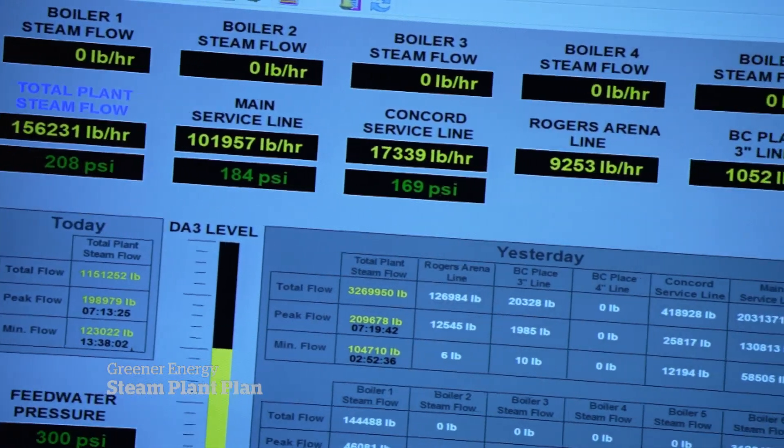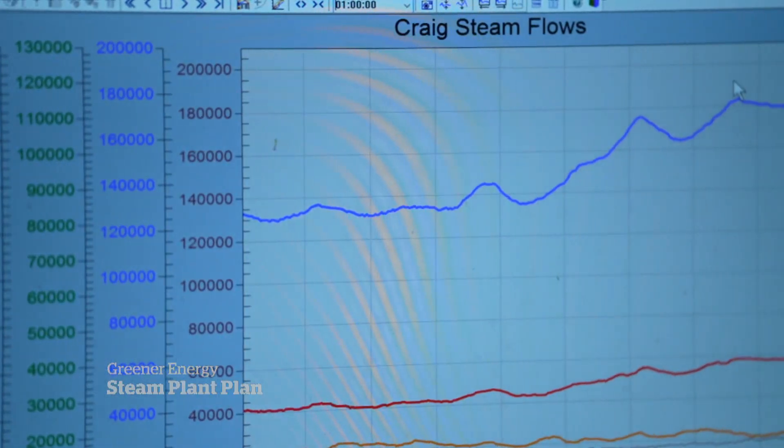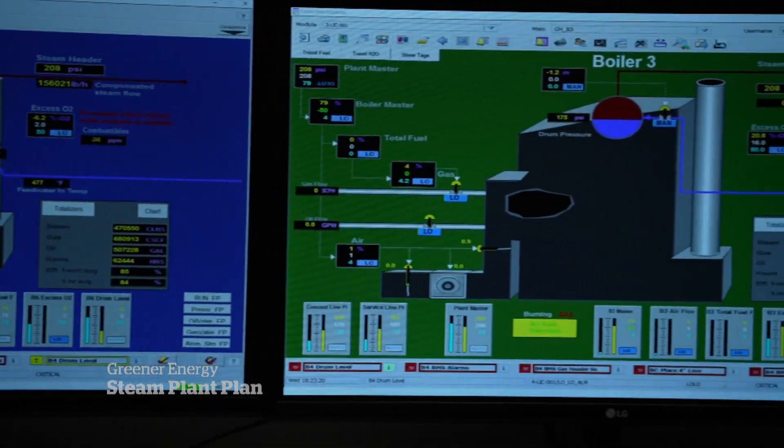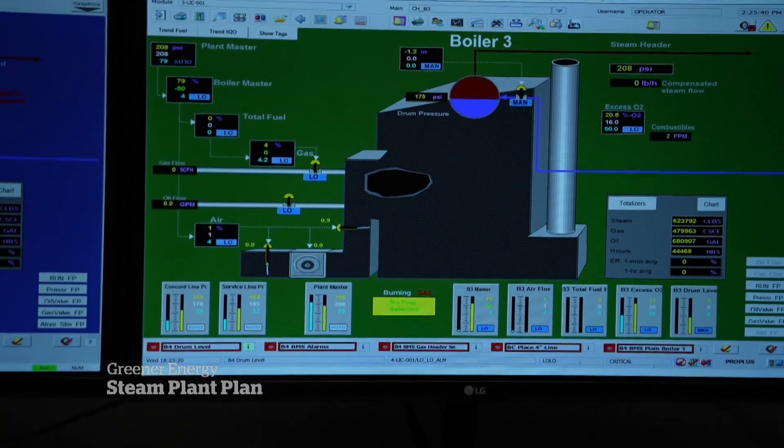So this is command central basically. Exactly, yes. The old pneumatic controls are only for one or two boilers. The other five boilers are controlled from what's called our Delta B system.